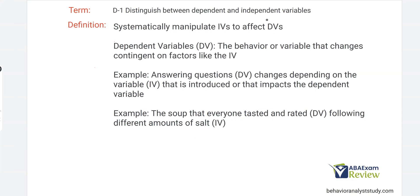So if we talk about the DV, remember, we're systematically controlling the IV to affect the DV. The DV is the behavior or variable that changes contingent on factors like the IV. We'll talk next video about things like confounds and extraneous variables. Everything going on in the environment has a chance to impact our dependent variable — it's our job to control for those things. What we want in order to establish true experimental control is to ensure that it is actually our independent variable changing the DV. If a different variable that we're not controlling affects the DV, we don't have experimental control.